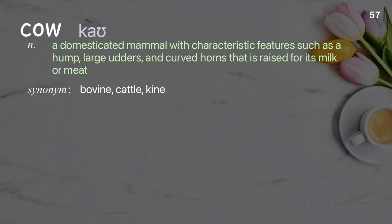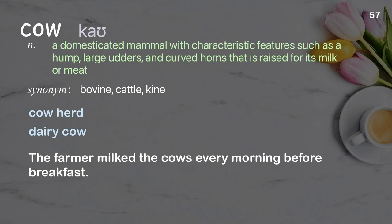Cow: a domesticated mammal with characteristic features such as a hump, large udders, and curved horns that is raised for its milk or meat. Examples: cow herd; dairy cow. The farmer milked the cows every morning before breakfast.